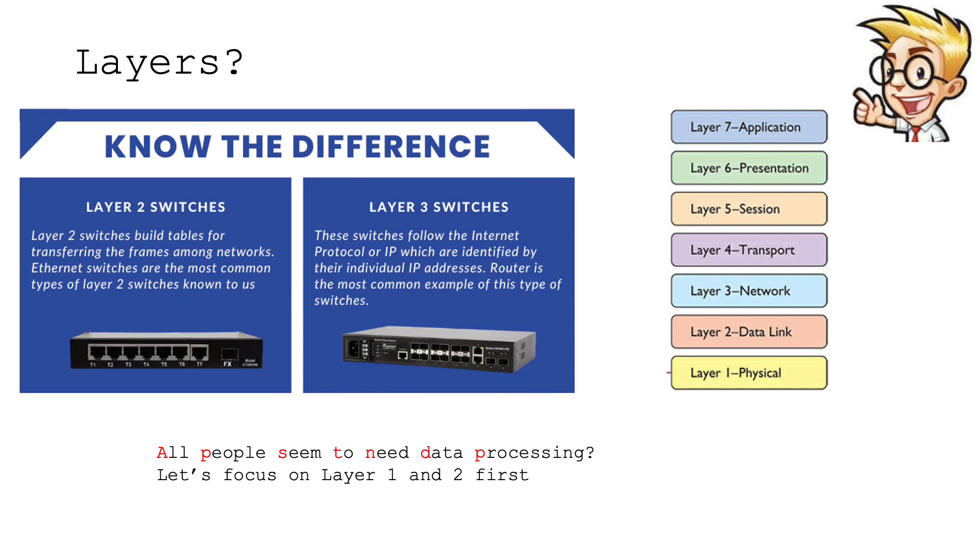Okay, so we're talking about OSI model layers. What is a layer? If I say layer 2 switch or layer 3 switch, does that mean anything? There's so many different layers we need to know: A, P, S, T, N, D, P. A lot of people use the acronym: All people seem to need data processing. We're going to focus on layer 1 and 2 first, the physical and data link.